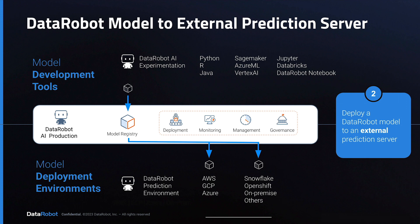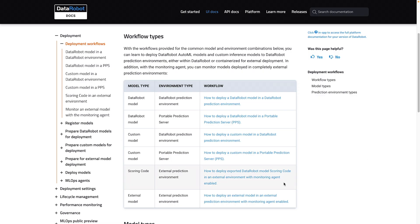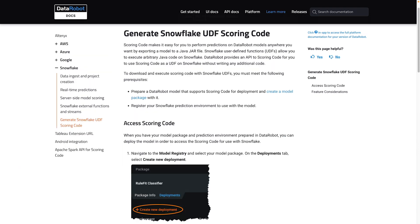The second workflow is to deploy a DataRobot model to an external prediction server. Here, our use of the word external signifies that it is outside your DataRobot software. The workflow is to develop with AI experimentation, bring the model into the model registry, and then deploy it externally. Three specific options to be aware of are the portable prediction server, Java scoring code, and Snowflake Java UDF. The third option is specific to Snowflake, while the other two will work with multiple external prediction environments. In the documentation, the scoring code option corresponds to row 5 in this table, the portable prediction server option corresponds to row 2, and the Snowflake-specific option is covered in another section dedicated to Snowflake only.